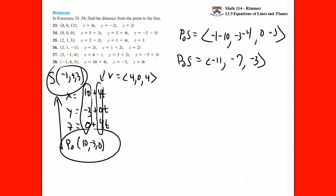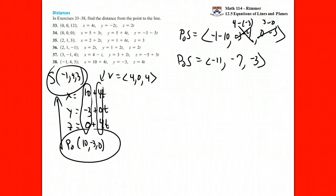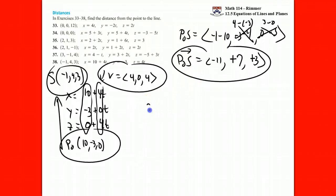I made a small mistake there — let me correct that. It should be 4 take away negative 3, and 3 take away 0. Sorry about that — it makes a big difference. Now I have my vector v and my vector P0 to S. The formula for the distance is the magnitude of the cross product between these two vectors, divided by the magnitude of v.